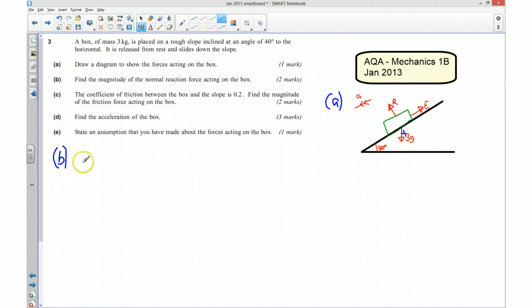So my equation is going to be the reaction force. And because it's in equilibrium, it's going to have to be equal to what's going on in this direction here. So it's going to be equal to 3G, which is the weight. But I need to times that by cos 40. So it's going to be 3G cos 40 degrees. So using my calculator, I can work that out. And that's going to be, to 3 significant figures, 22.5 newtons.